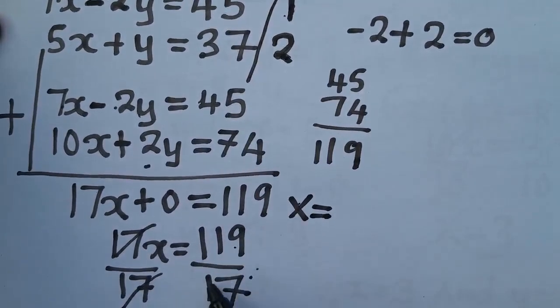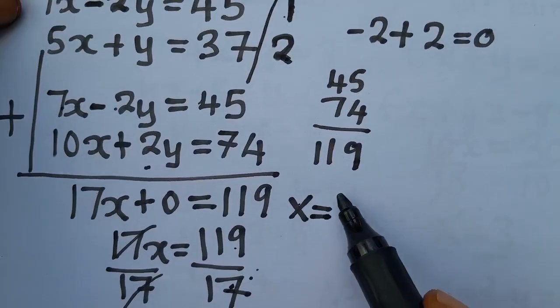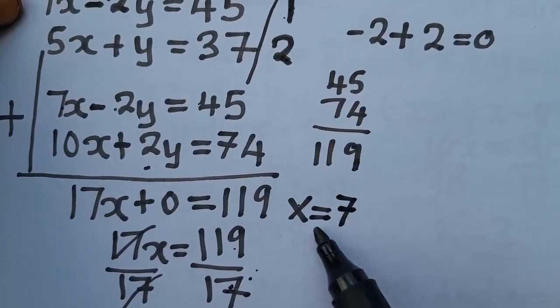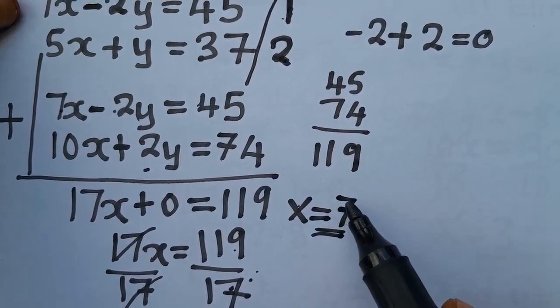x is now therefore equal to what? 119 divide 17, x is equal to 7. You are going to have a 7. This 7 is the value for x.